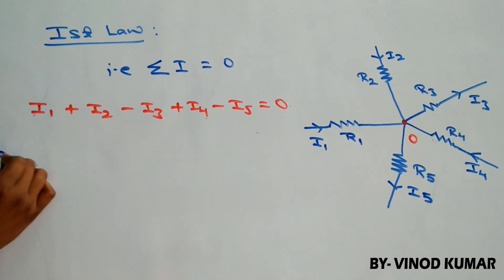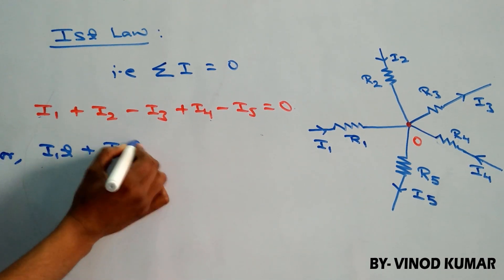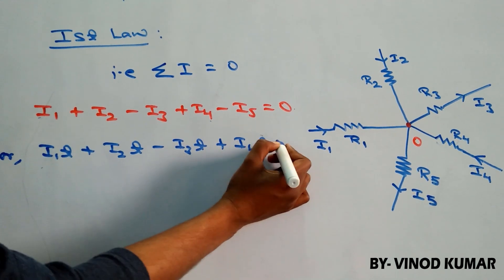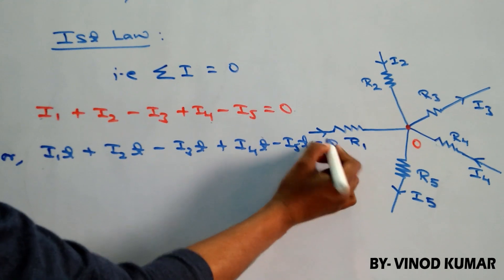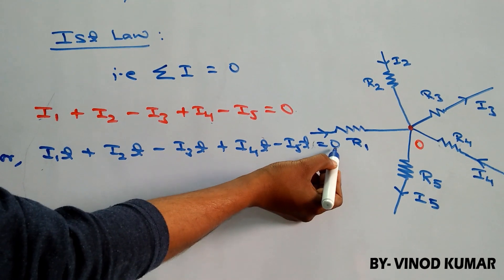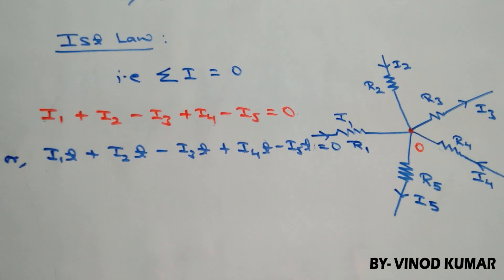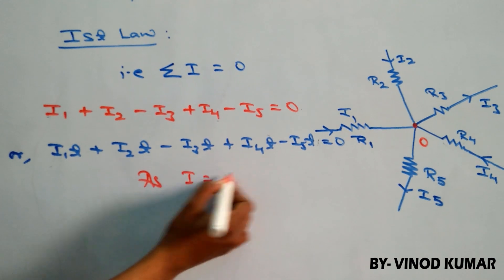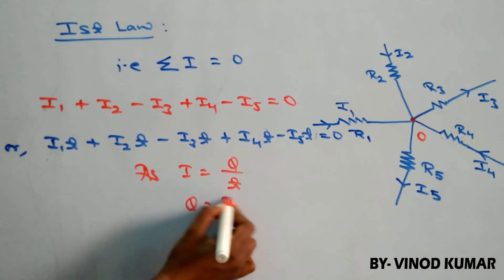So, it will become I1t plus I2t minus I3t plus I4t minus I5t equals to zero. If we multiply t on that side, it will also become zero. So students, as we already know, current I is equal to Q/t. So, what we can write here, Q is equal to It. Look at here, It.